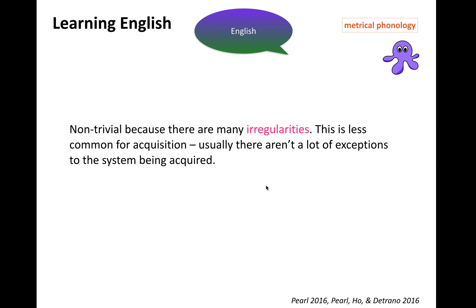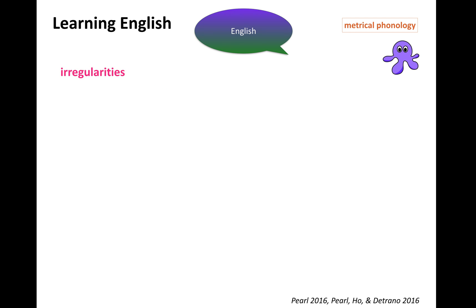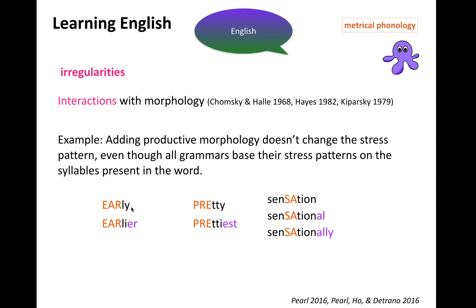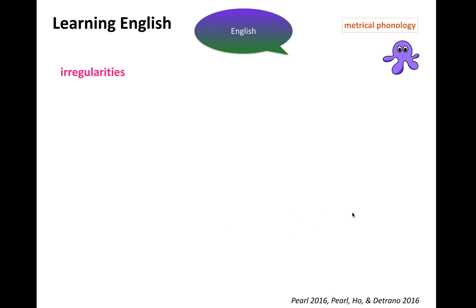A less normal problem, and one that is true of English Metrical Phonology, is that there are many irregularities. This is less common for acquisition — usually there aren't a lot of exceptions to the system being acquired, but in English Metrical Phonology there certainly are. There are interactions with morphology: adding certain productive morphology doesn't change the stress pattern even though the grammar would base stress on the syllables present. So 'early/earlier,' 'pretty/prettiest,' 'sensation/sensational/sensationally' — still the same stress pattern even when you're adding syllables. That's not expected under these approaches.